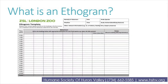A researcher will take this list of detailed behaviors and go watch an animal for a certain amount of time and record the behaviors that they're seeing the animal do. For example, this ethogram from the London Zoo divides the researcher's time by 30 seconds, so every 30 seconds the researcher will jot down the behavior that they're seeing an animal do.